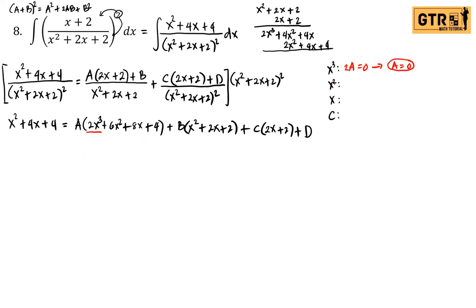For the coefficients of x²: we have 6A from the A part, plus B from the B part, and no x² from the C or D parts. On the left side we have 1. So 6A + B = 1. Since A = 0, substituting gives B = 1.